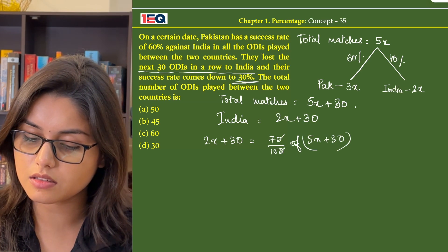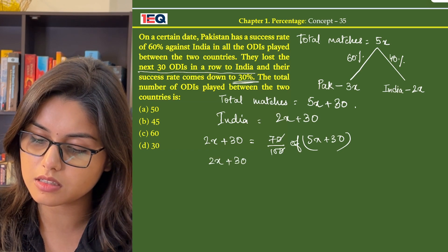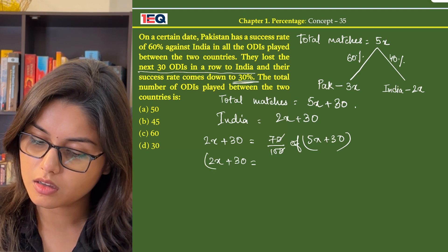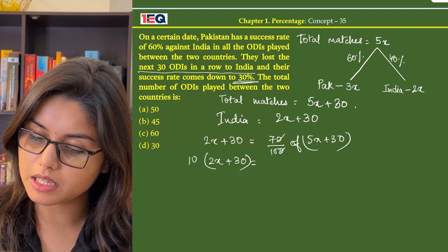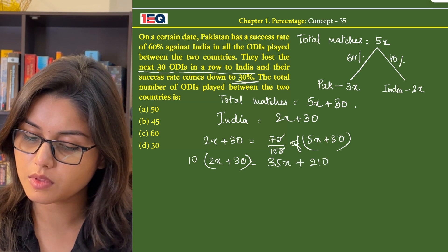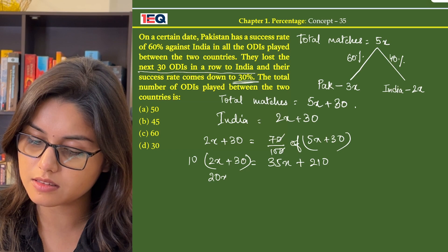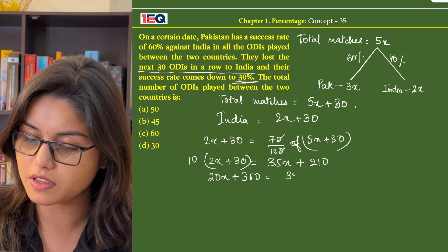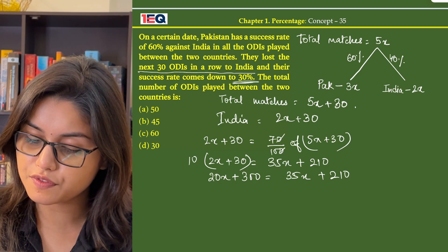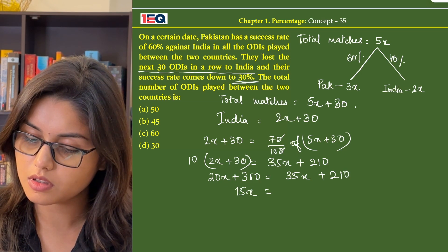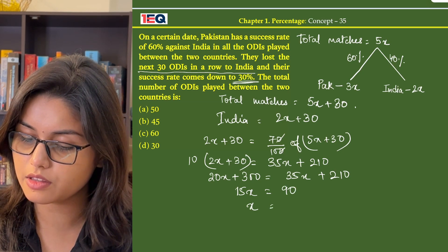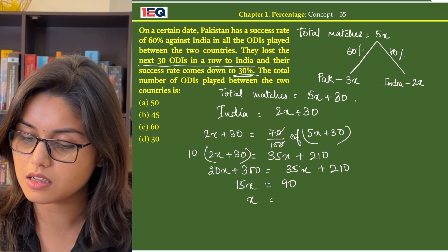After cancelling and multiplying through by 10, we get: 2x plus 30 equals 35x plus 210, which gives us 20x plus 300 equals 35x plus 210. Therefore 15x equals 90, and from here we get the value of x as 6.